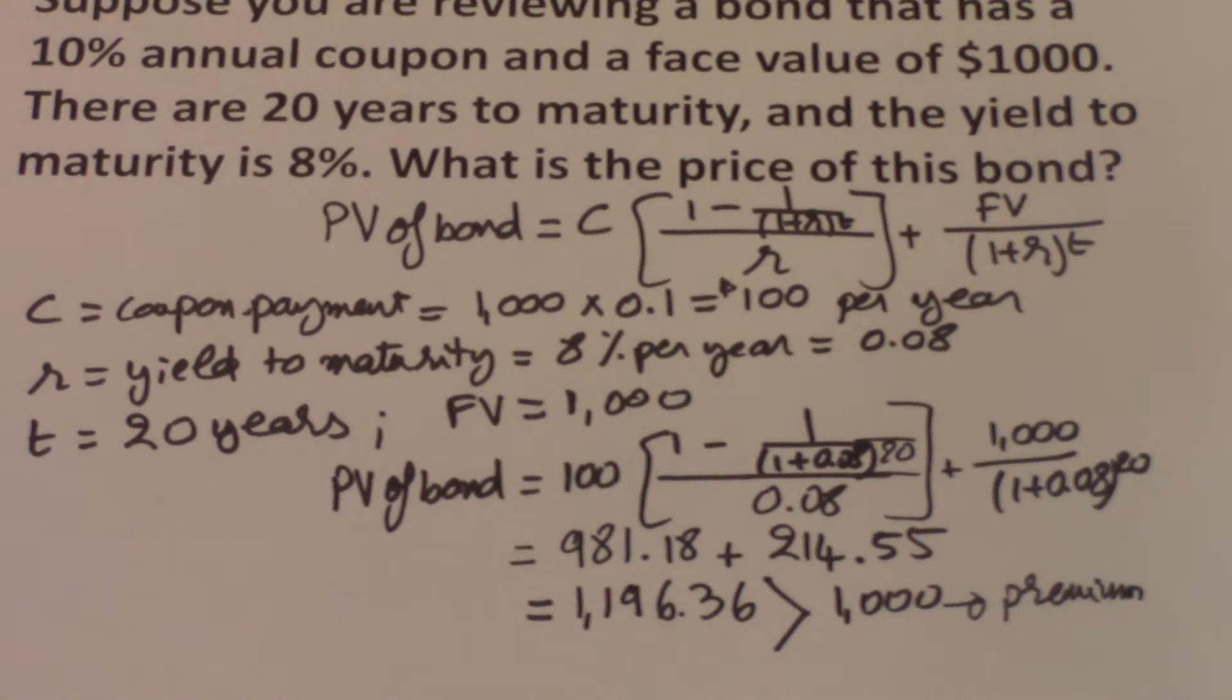And so this makes your bond very attractive if you sell that bond in the market. And this is why you'll be able to get a price that is higher than the face value or the par value of $1,000.